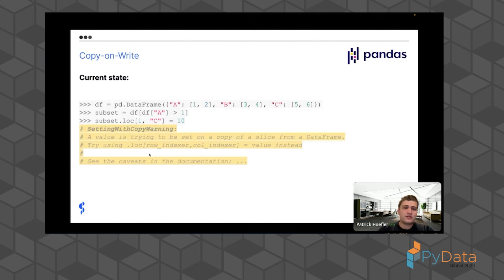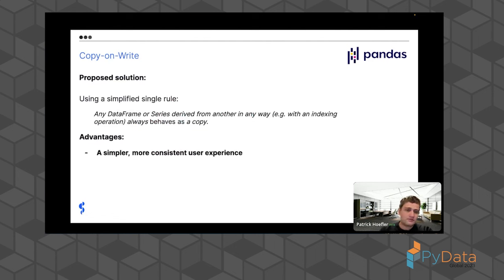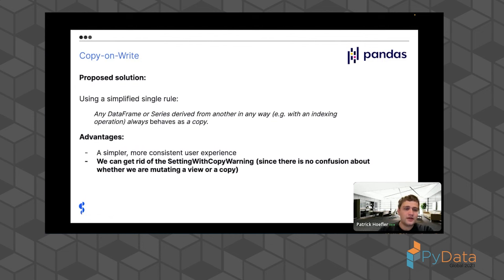Copy-on-write is a relatively simple idea: it will never be possible to update two pandas dataframes at once with one operation. In our previous example, copy-on-write guarantees that only the subset gets updated every time, no matter how you create it — previously a copy might update both objects at once through view mechanics, but all of that will be gone. There will never be confusion about whether your operation updated one or two or five dataframes.